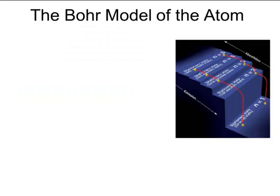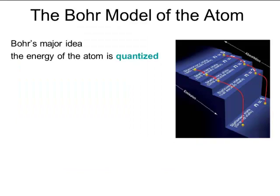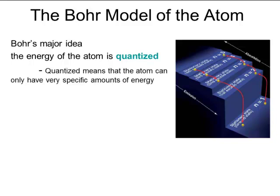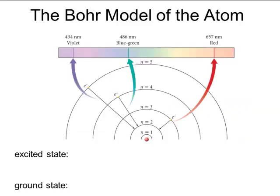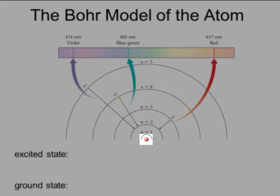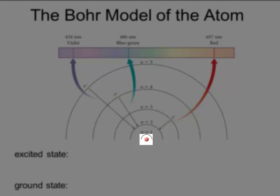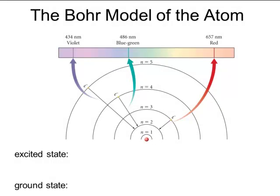This relates to something called the Bohr model of the atom. It was really Bohr's idea that the energy of the atom is going to be quantized — it's at these different energy levels. Because it's quantized, these energy levels can only have very specific and well-defined amounts of energy associated with them. The amount of energy in the atom is going to be related to the electron's position in the atom.